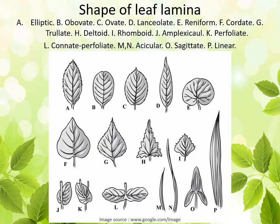Coming to the different shapes of the blade — depending on the shape they are named differently. Some are elliptical, some are obovate, some are lanceolate, some are reniform, some are cordate, some are rhomboid to acicular, some are sagittate, some are linear, some are perfoliate, and some are connate and perfoliate. Depending on the different shape, different shape names of leaf lamina are given.